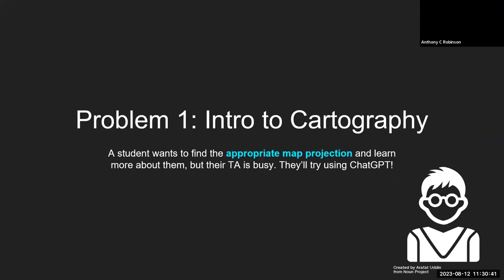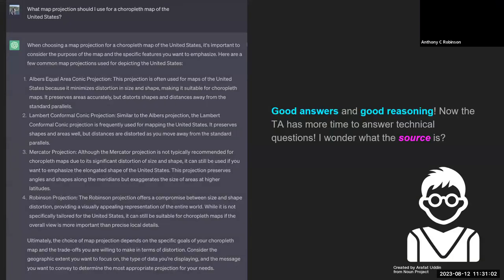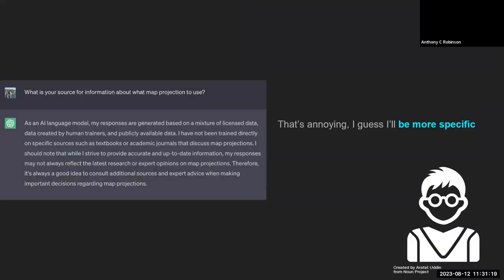I have two examples. The first is an intro cartography student who just has some simple questions — they want to find an appropriate map projection, but their TA is busy. So they try ChatGPT. They ask: 'What map projection should I use for a choropleth map of the US?' They actually get a pretty good answer for this basic question with good reasoning and explanation. The student is happy at first, but now they want to learn more and ask for a source, and ChatGPT doesn't have a specific source — it's a combination of many different things.